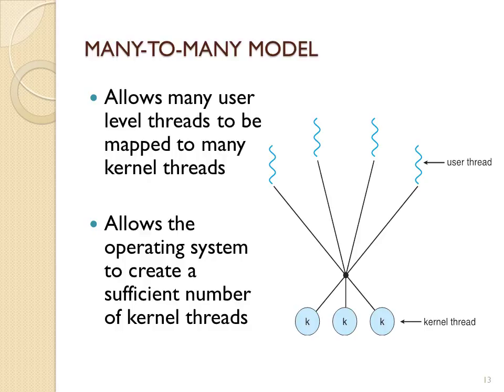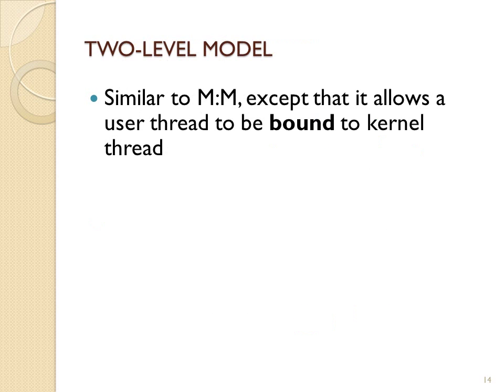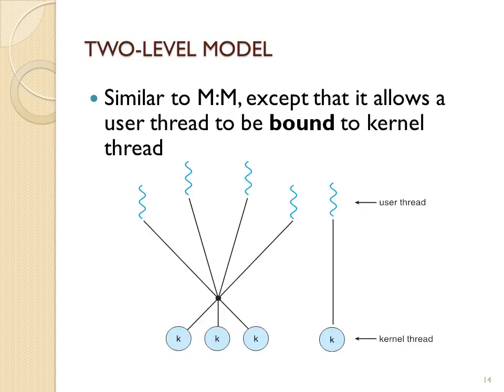The way to deal with resource exhaustion is to use many-to-many. Every time you create a thread, you continue to get kernel threads until those allocated to the process are used up, at which point a new user thread must select and take a kernel thread away from another user thread — but this requires more management. The two-level model is the same as many-to-many, except it allows you to bind very important user threads to kernel threads so those will not be taken away, though this also requires significant management by the operating system.